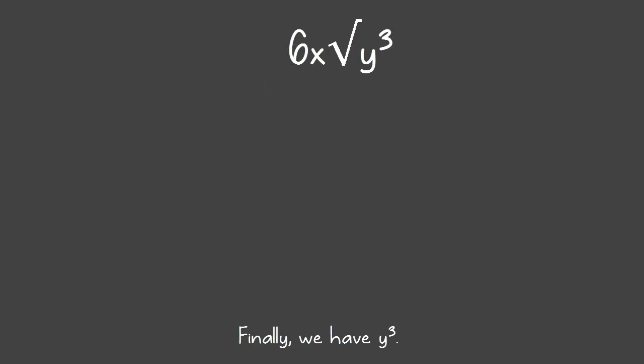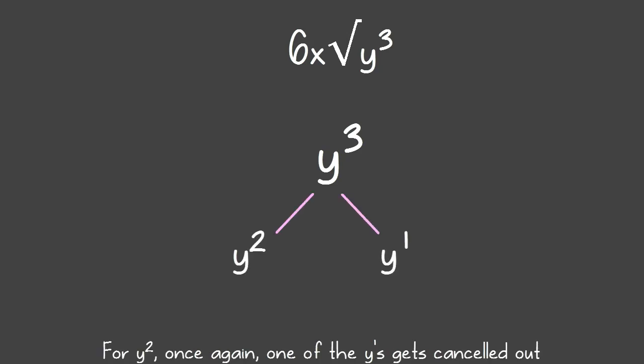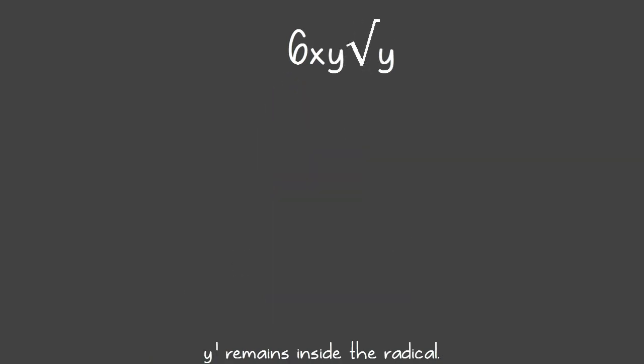Finally, we have y to the third. To find the square root of y cubed, we have to separate y cubed into y squared and y to the first power. Once again, with y squared, one of the y's gets cancelled out, the other goes outside the radical. y to the first power stays inside the radical.